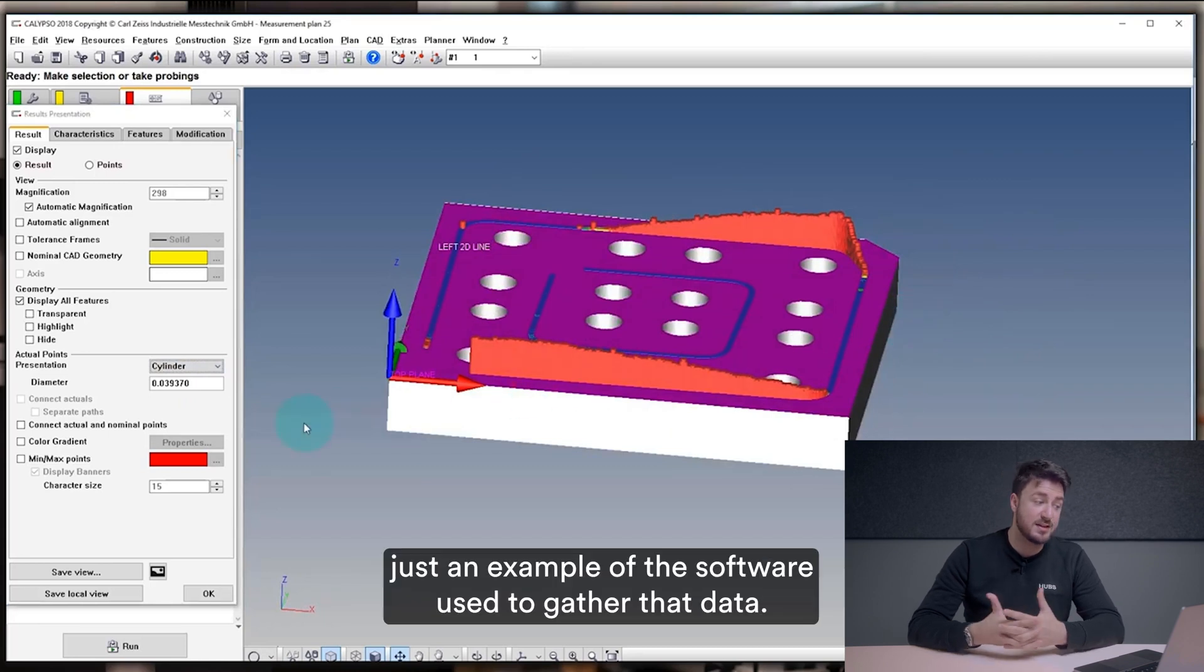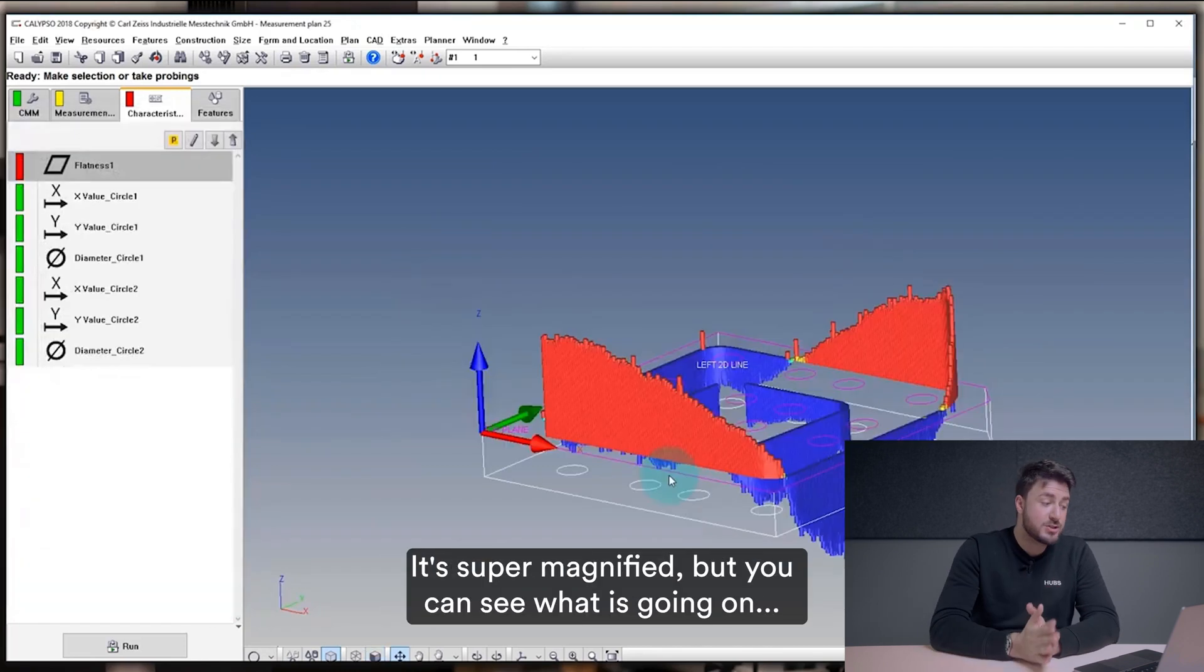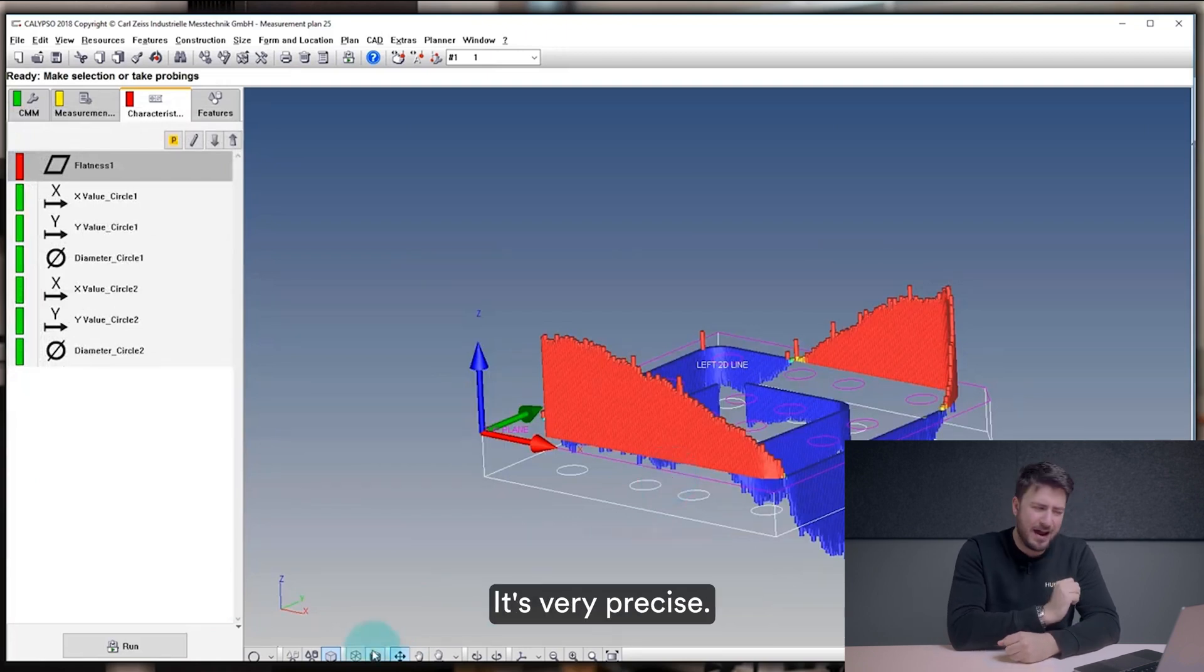What you can see right here is an example of the software used to gather that data. Here it's super magnified but you can see what is going on with the tolerances of this part. It's very precise.